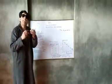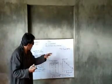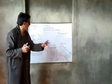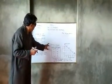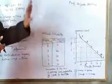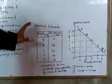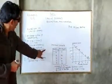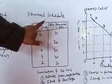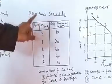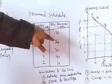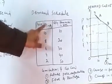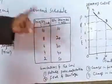We are now explaining how the law of demand, propounded by Professor Alfred Marshall, can be explained with the help of a demand schedule and demand curve. The demand schedule is a table or chart showing different combinations of a commodity at different prices. In the first column we show the price per kg in rupees, and in the second column the quantity demanded in kgs.